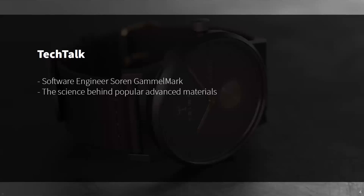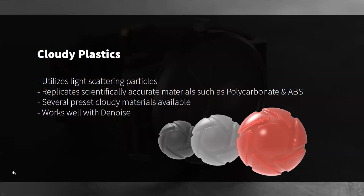Incredible, as always. Thank you, Soren. Hopefully that's given you more background on some of our advanced materials. Now let's start looking at them. To kick it off, we're going to discuss cloudy plastics. The cloudy plastics material in Keyshot utilizes light scattering particles to replicate complex, scientifically accurate materials such as polycarbonate or ABS. Within the material adjustments, you can control parameters such as light transmission, roughness, refractivity, and transparency or cloudiness. You can select from preset materials in the materials tab, change your material type in the dropdown, or access different materials through the Keyshot Cloud.